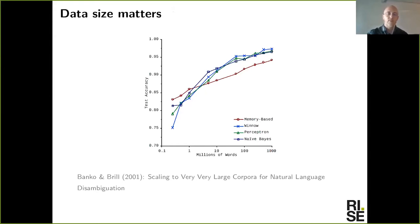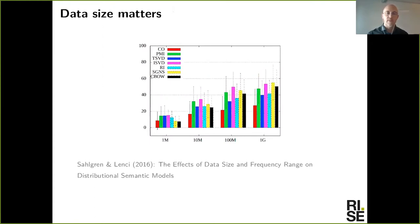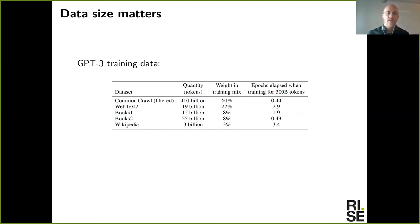We have known for a long time that size matters when it comes to data for NLP — that's not a new insight. There was an influential paper about 20 years ago by Banko and Brill where they scaled NLP solutions to what they called 'very very large corpora' of around one billion words, which was huge at the time. GPT-3 has been trained on closer to 500 billion words.